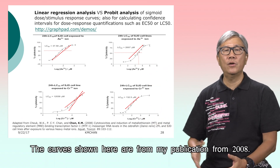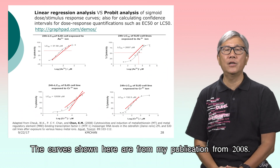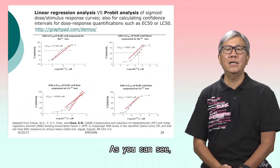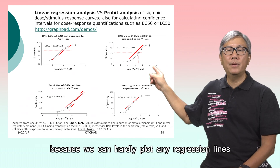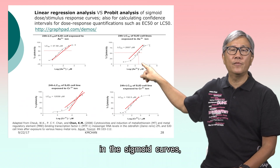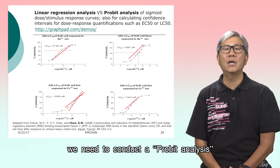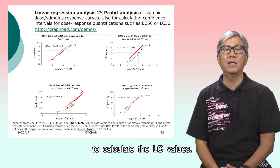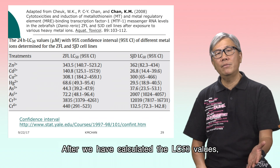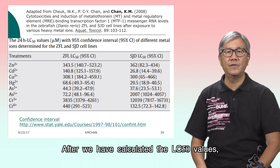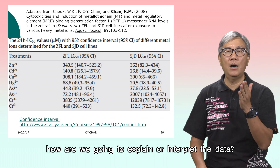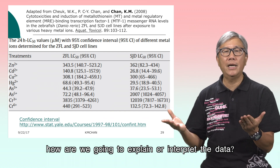The curves shown here are from my publication from 2008. As you can see, because we can hardly plot any regression lines in the sigmoidal curves, we need to conduct a probit analysis to calculate the LC values. After we have calculated LC50 values, how are we going to explain or interpret the data?